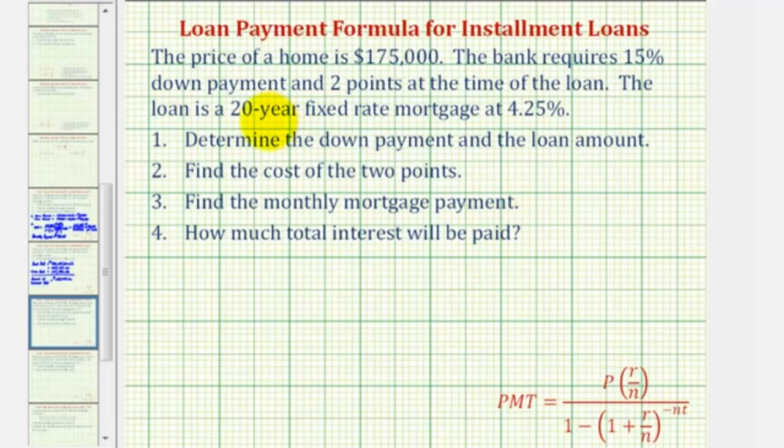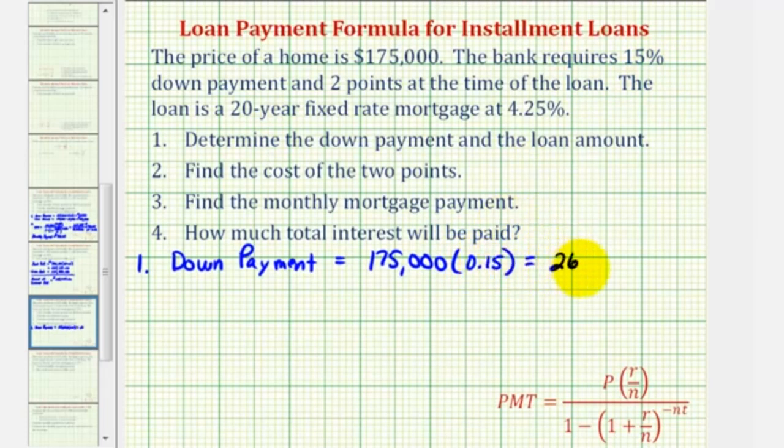So for number one, since the loan requires 15% down payment, we want to find 15% of $175,000. We could do this by multiplying $175,000 by 15% expressed as a decimal, which would be 0.15, which comes out to $26,250.